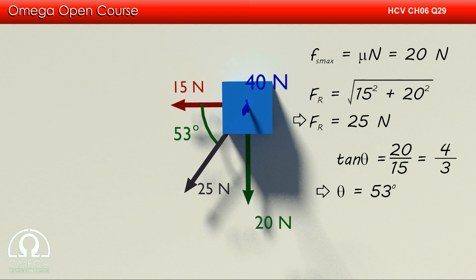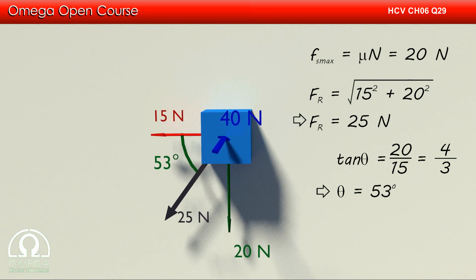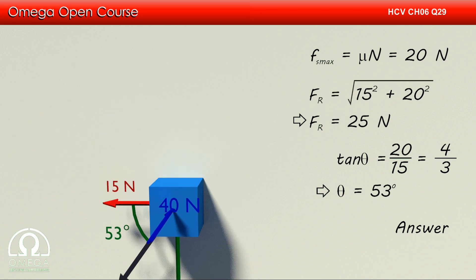Since the net force trying to move the block is more than the maximum value of static friction, the block will move. Also, since the resultant of the force is at 53 degrees with the horizontal, the block will slide on the wall making 53 degrees with the horizontal. This is our answer.